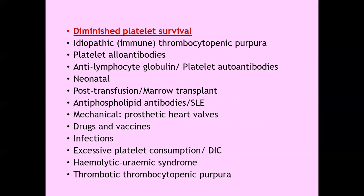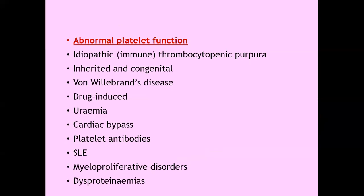Other causes of decreased platelet survival include post-transfusion or marrow transplant, neonatal causes, excessive platelet consumption seen in DIC, hemolytic uremic syndrome, and thrombotic thrombocytopenic purpura. Platelet count may be normal but their functions abnormal, seen in ITP, inherited or congenital defects, von Willebrand disease, drug-induced causes, uremia, cardiac bypass, platelet antibodies, SLE, myeloproliferative disorders, and dysproteinemias. Thrombocytosis (abnormally high platelet count) is seen in essential thrombocythemia, other myeloproliferative disorders, and causes like blood loss, trauma, burn, post-splenectomy, malignant disease, tuberculosis, and sarcoidosis.